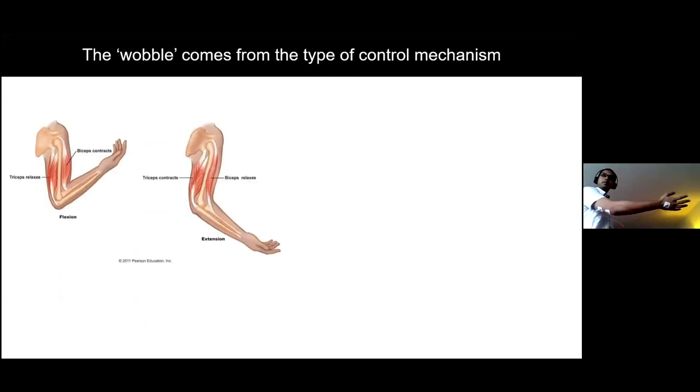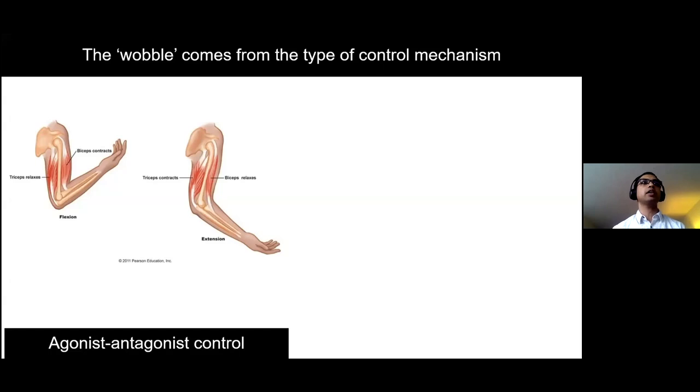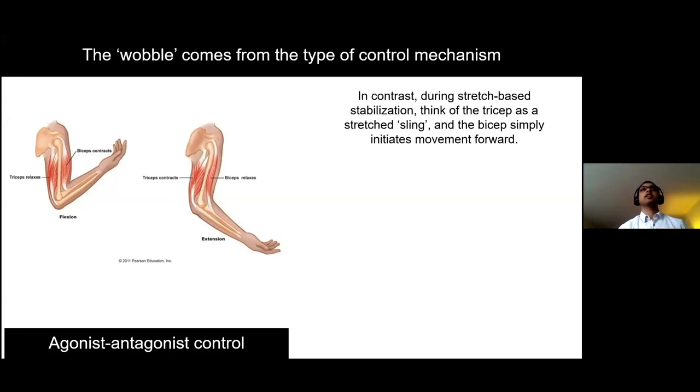Let's think about the bicep and the tricep. When the bicep contracts, it can exert a force this way, and the tricep contracts can exert a force this way. What typically happens when we reach out at a small level is: bicep contracts, tricep contracts, bicep contracts, tricep contracts. I've widely exaggerated what I just told you, but that's what we're picking up with the accelerometers. Let's call this type of control mechanism agonist-antagonist control. You can also think about the tricep as a sling and the bicep simply initiating the movement inside the sling. This is a clear mental model of what the two muscles are doing while moving in these two different ways.